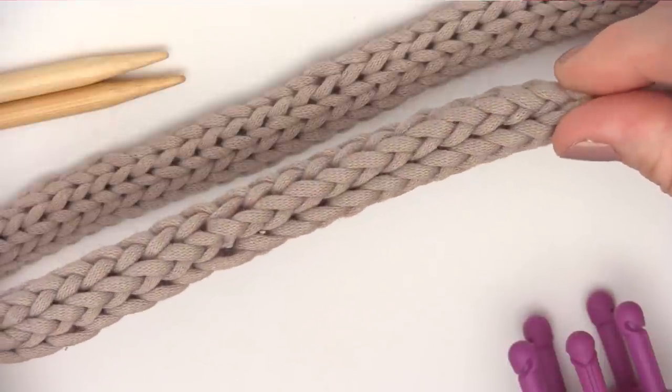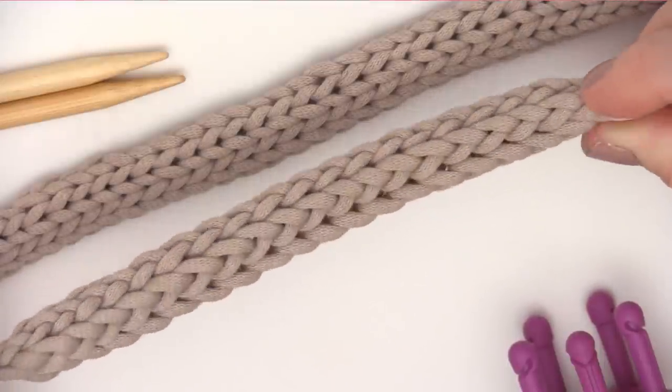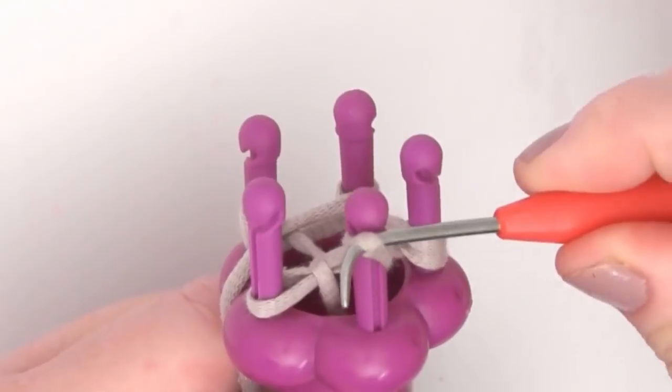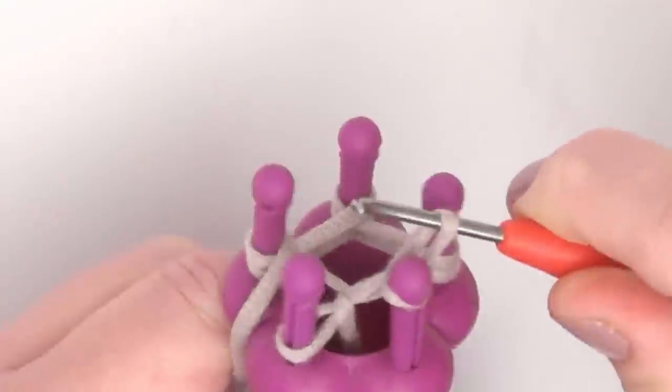Did you know we can make I-Cords without using knitting needles? We're going to dive into spool knitting. This is also called corking, French knitting, or tomboy knitting.